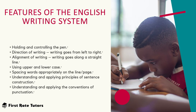It's important to understand the features of the English writing system. The first is controlling and holding a pen, which children need to learn. The next is directionality — the idea that writing goes from left to right. Another feature children need to understand is the alignment of the writing.